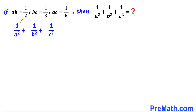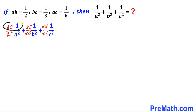We are going to manipulate the first term by multiplying and dividing by b²c² on both top and bottom. Likewise, in the second term we multiply and divide by a²c² on top and bottom. And for the third term we multiply and divide by a²b² on top and bottom. Multiplying through, 1 times b²c² over a²b²c² gives us b²c² divided by a²b²c².